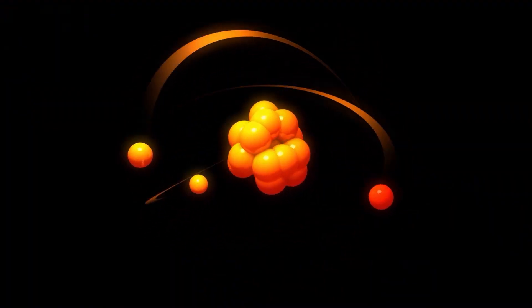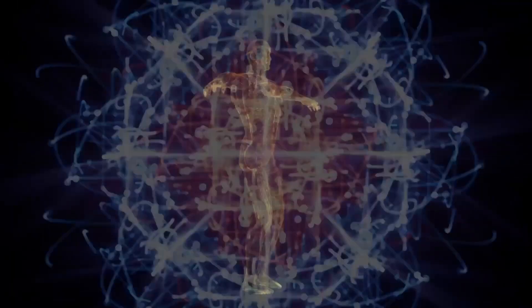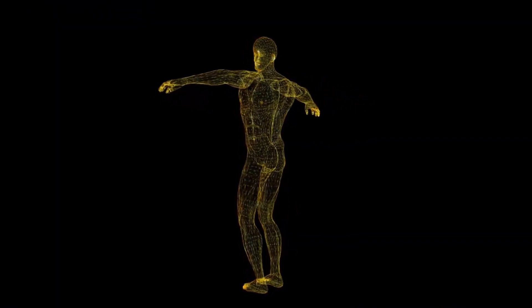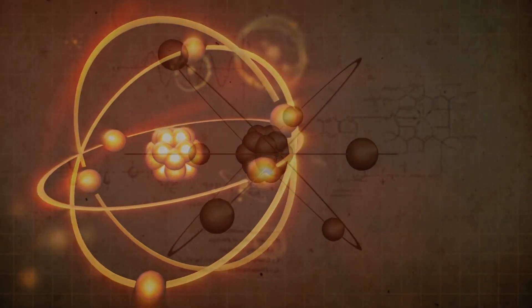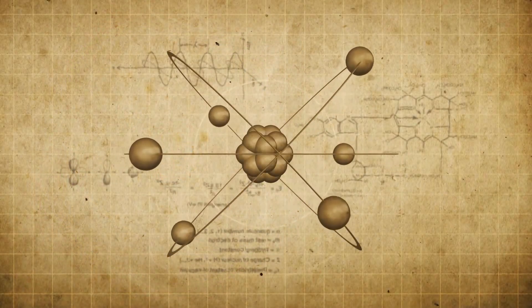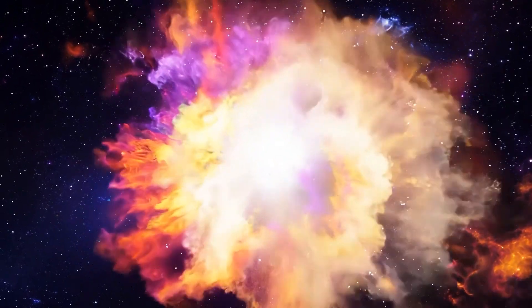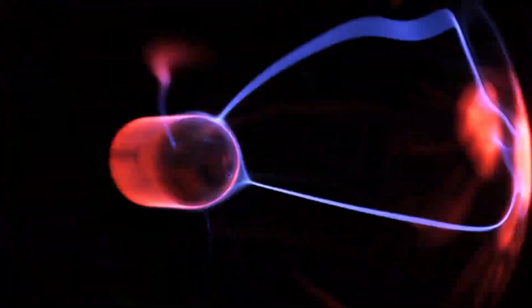What if I told you there are particles so tiny and so elusive that trillions of them are passing through your body right now, completely unnoticed? Meet neutrinos—subatomic particles born in the heart of stars, during cataclysmic supernovae, from the decay of radioactive elements, and even in the high-energy collisions of particle accelerators.